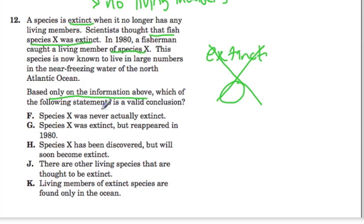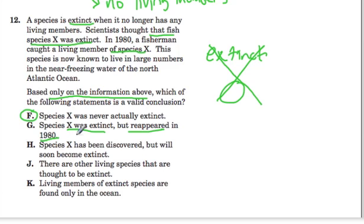If we look at these choices carefully, we find out that really, F is the only choice that makes sense, which says that species X was never actually extinct. Because again, if it was, then there would be none of them left, and you wouldn't find them. All of these other ones don't really make sense. For example, with G: if species X was extinct and then reappeared in 1980, you have to ask yourself, how would it reappear if there were no species to reproduce? If there were zero of them, who was making this new fish that was caught by the fisherman? All of them have logical holes and are not logical. So only F makes sense.